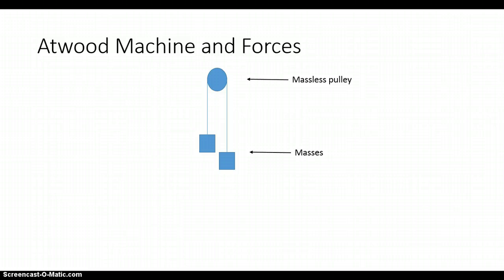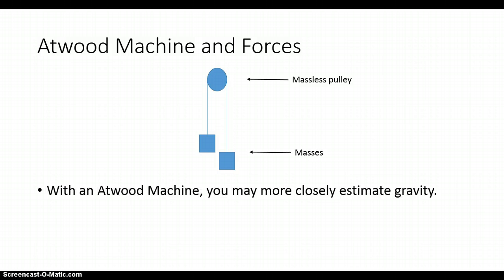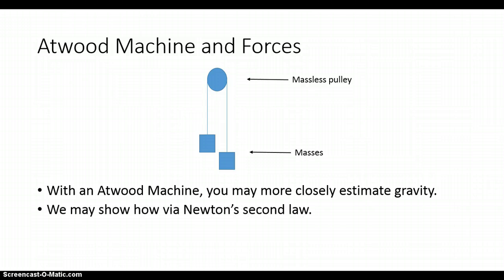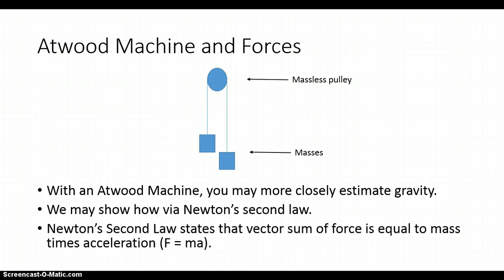So what can you do with an Atwood machine? With an Atwood machine, you may more closely estimate gravity. The way that we can do that is by using Newton's second law. Newton's second law states that the vector sum of forces is equal to mass times acceleration, which is to say F is equal to Ma.